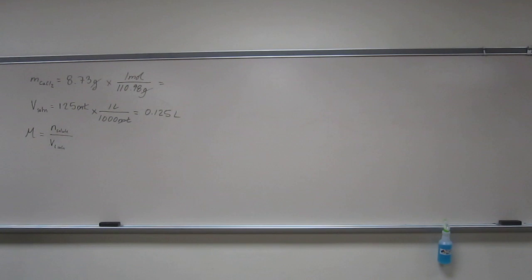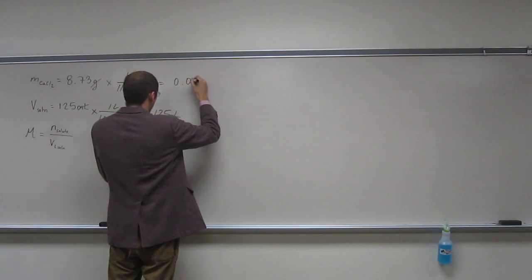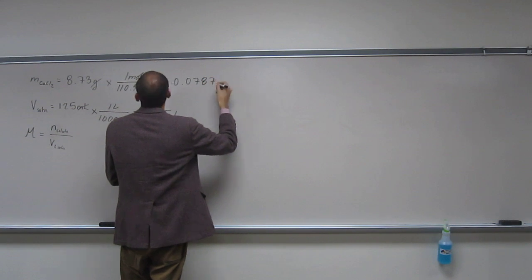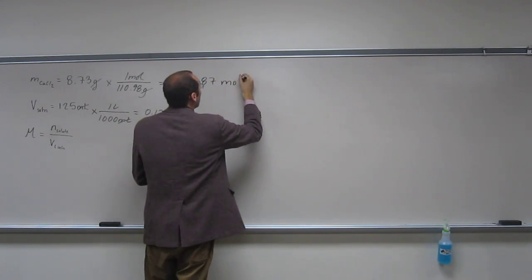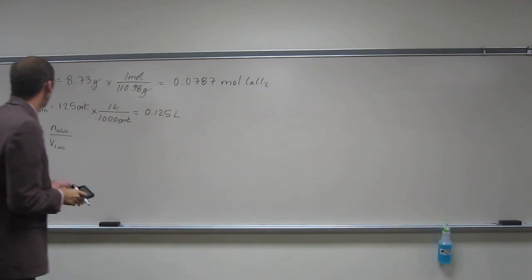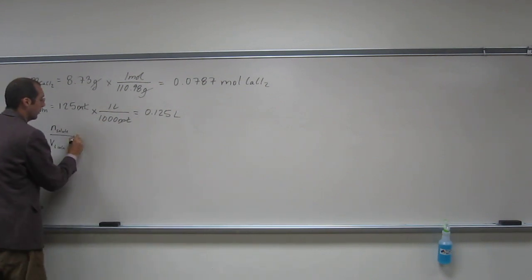Okay. And when we do that, 8.73 divided by 110.98 equals 0.077 moles of calcium chloride. Okay, so now we've got the moles of solute over the volume in liters, so we can just plug and check.